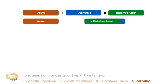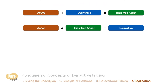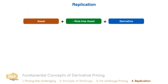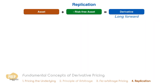It follows that the asset and the risk-free asset can be combined to produce the derivative. Alternatively, the derivative and the risk-free asset can be combined to produce the asset. This process of creating an asset or portfolio from another asset, portfolio, and/or derivative is known as replication. For this example, we show how a long forward position in an asset can be replicated by borrowing at the risk-free rate to buy the asset.